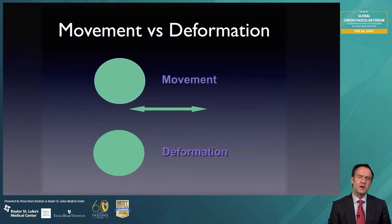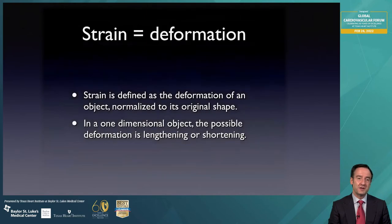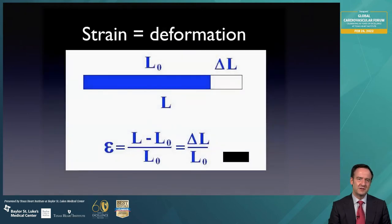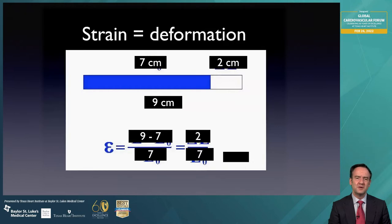Let's take a look at the image on screen — the difference between movement, which is not what I'm interested in, and deformation, which is what I'm interested in. Strain is deformation. Strain is defined as the deformation of an object normalized to its original shape. In a one-dimensional object, the possible deformation is either lengthening or shortening. If you start with a blue bar of dimension 7, and go to 9 centimeters, the deformation is 2 centimeters, normalized to the original dimension: 2 divided by 7 gives a strain of 28%.